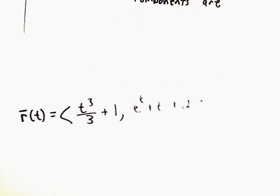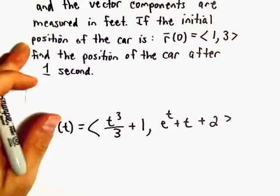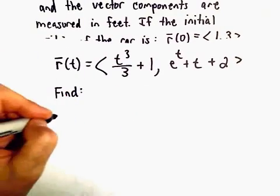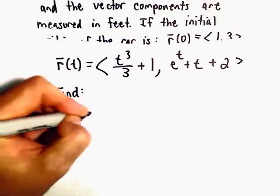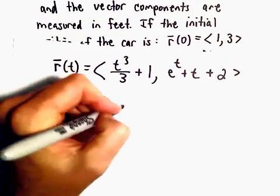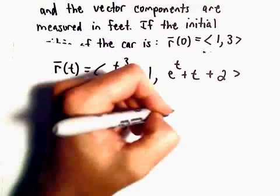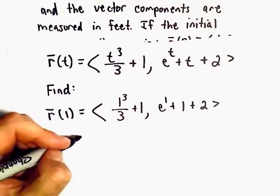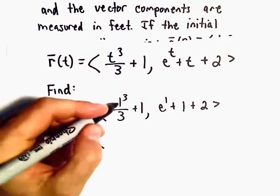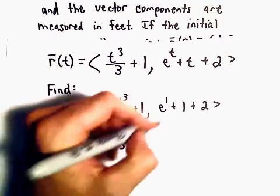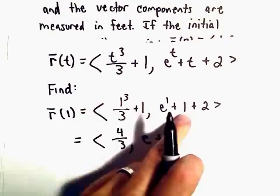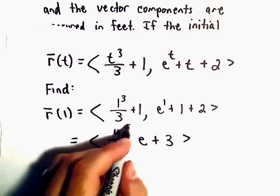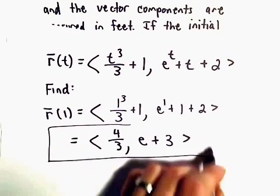All right, so we wanted to figure out, we wanted to find the position of the car after 1 second. So really what we want to find is we just want to find r(1). Well, all we have to do is plug that in. We'll get <1³/3 + 1, e¹ + 1 + 2>. Well, 1/3 + 1 is going to be 4/3. And then we would have e + 1 + 2, which would give us a positive 3. And now we've got the position of the car 1 second later.